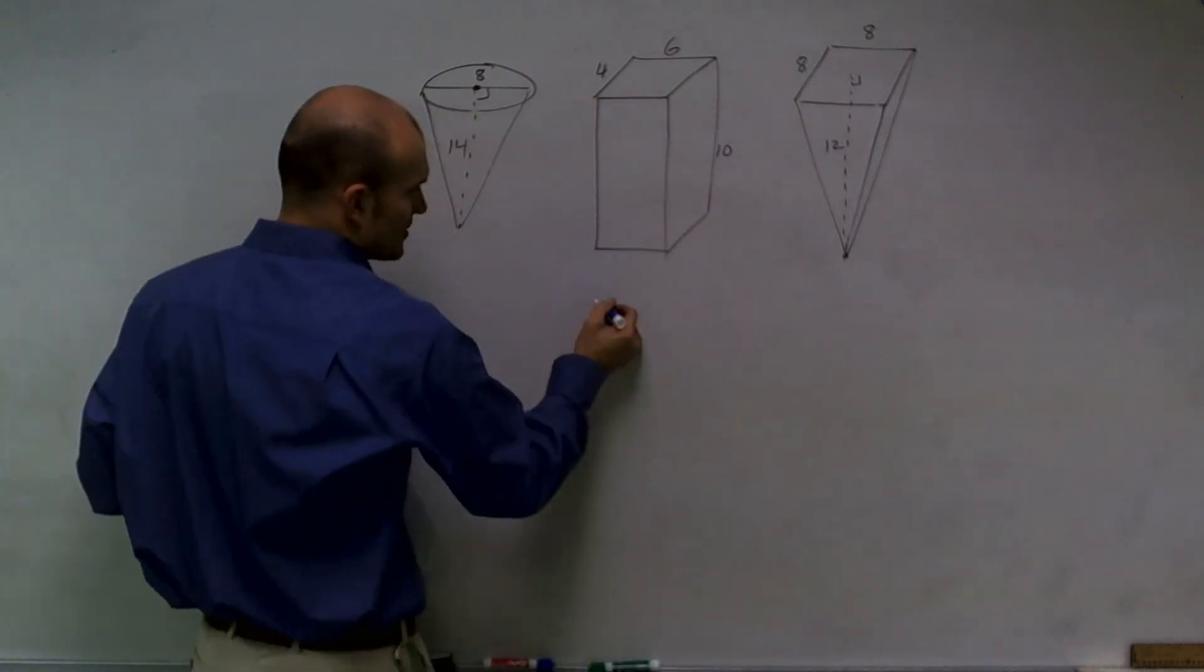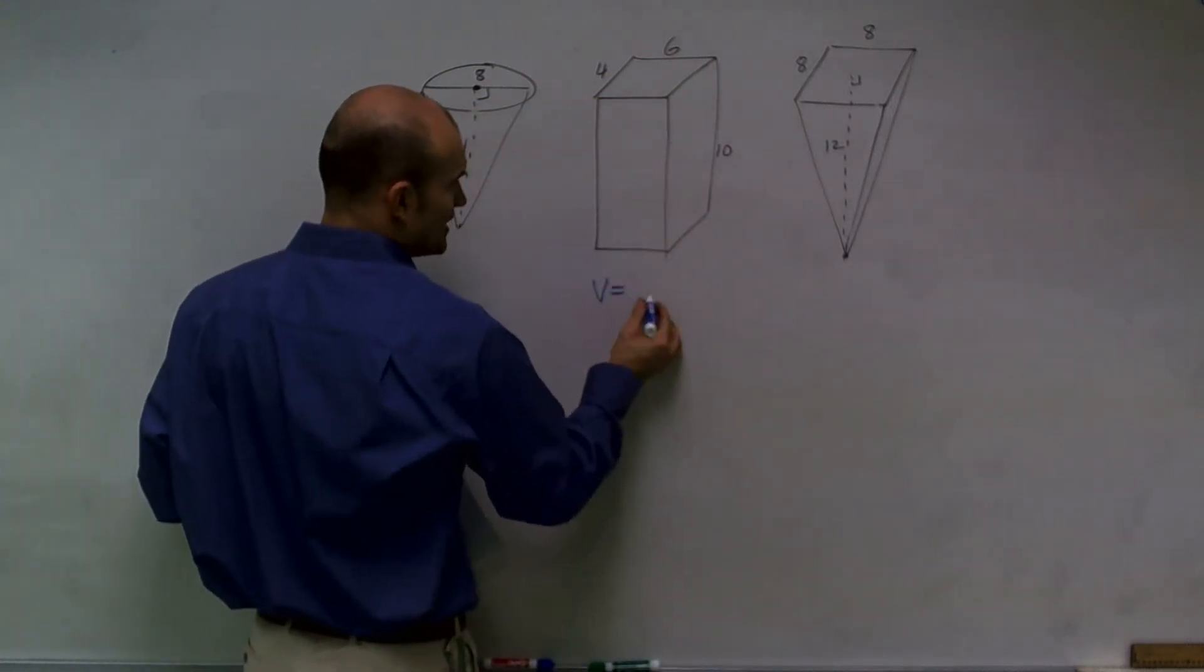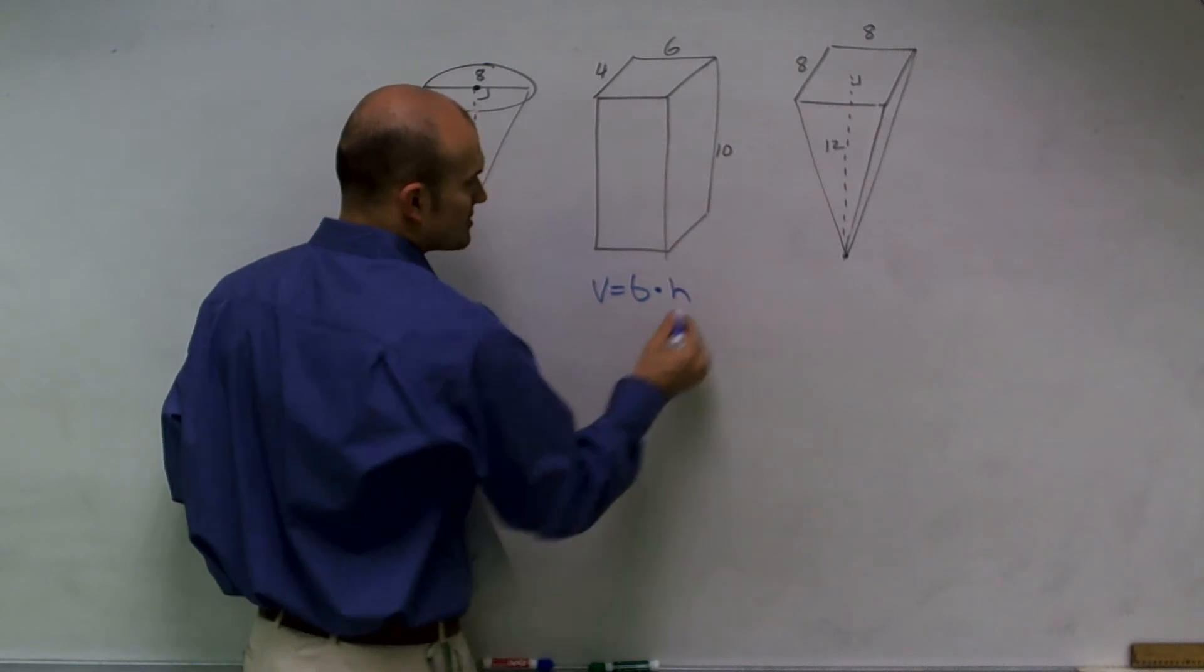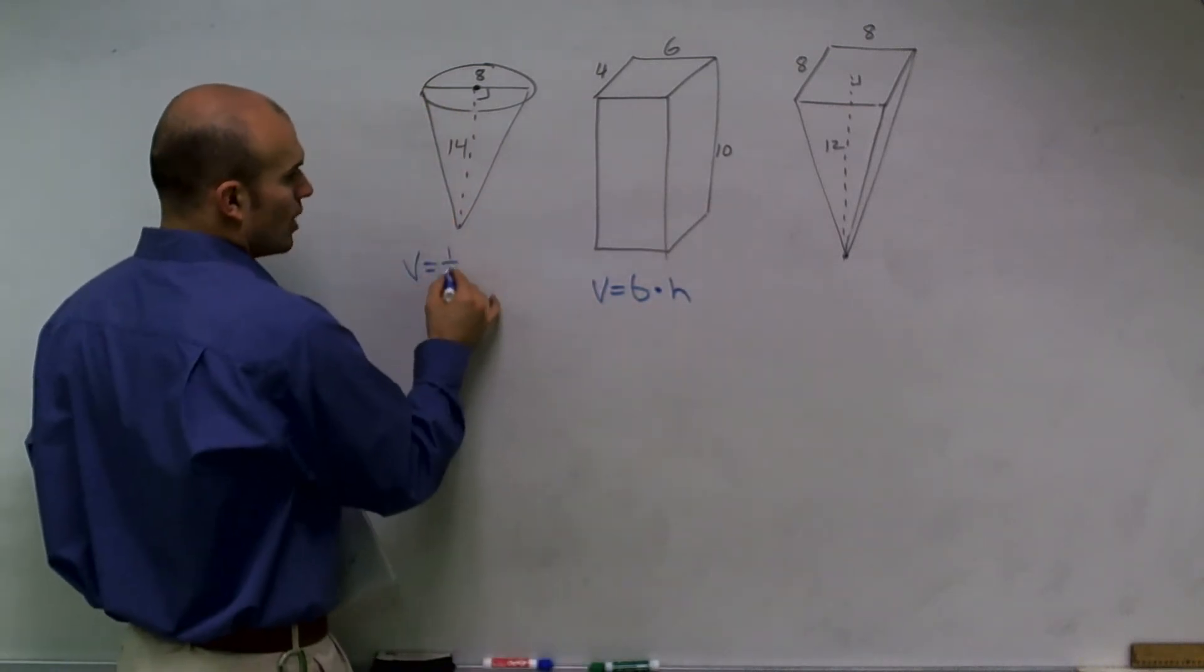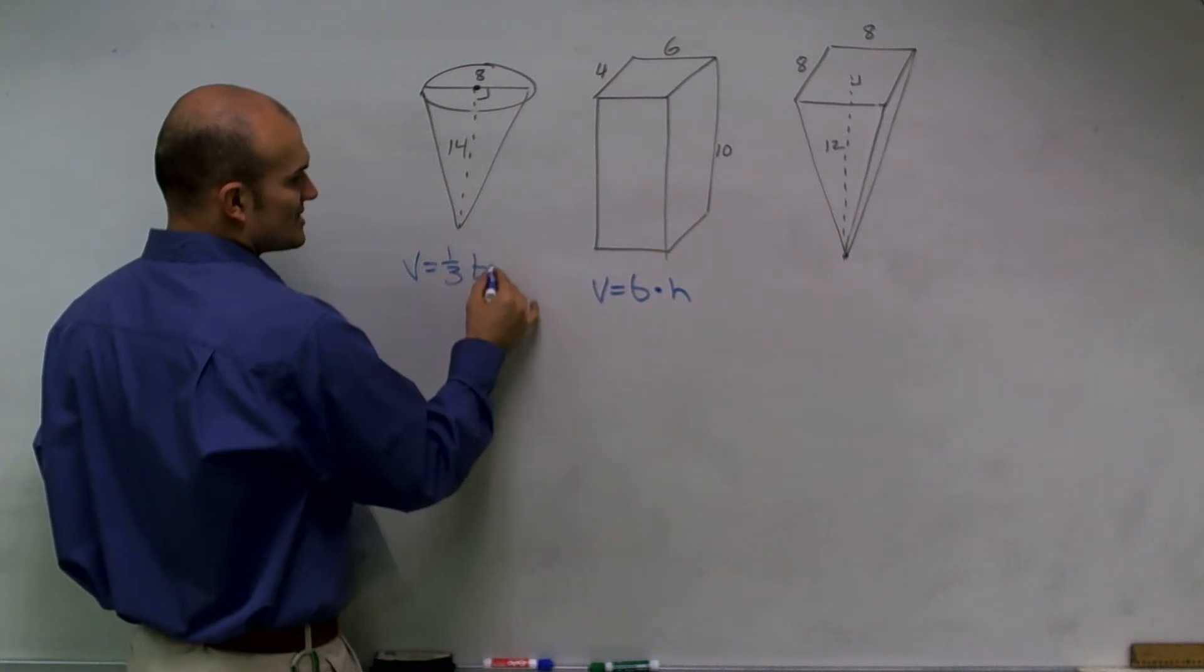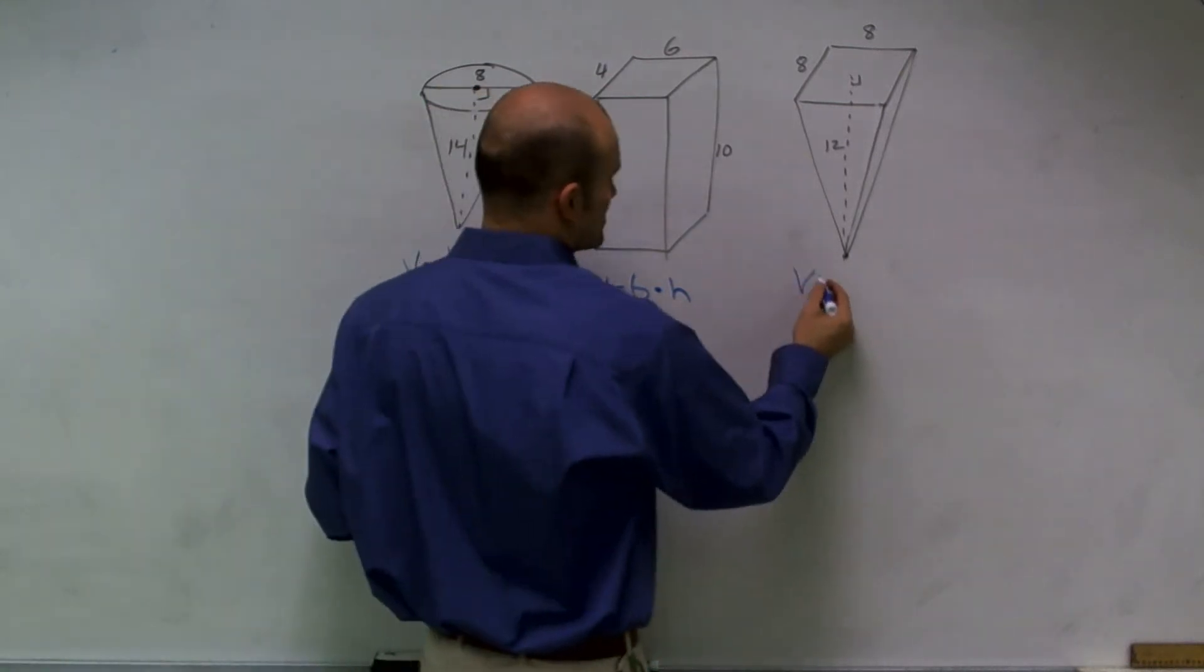So, this is what we call a rectangular prism. This one is volume equals area of base times your height. Here, we're going to have volume equals one-third area of base times height, and this one's going to be the same thing.